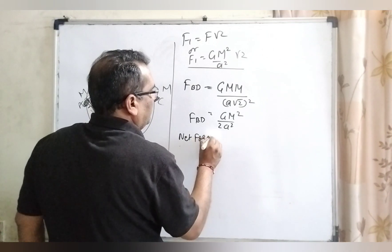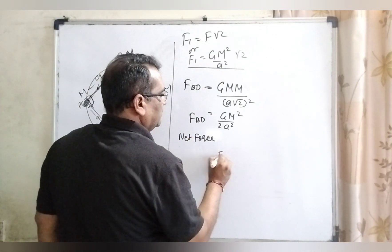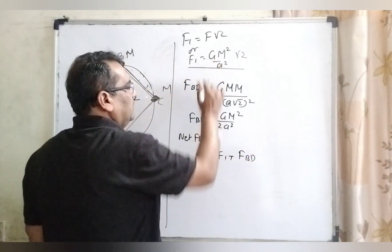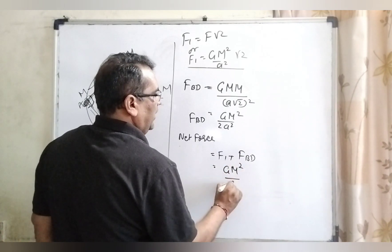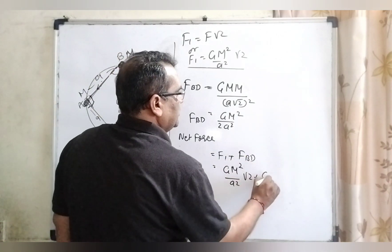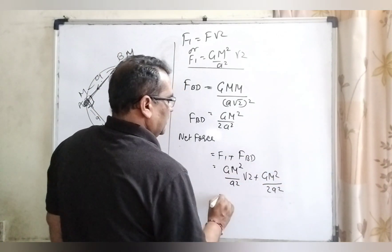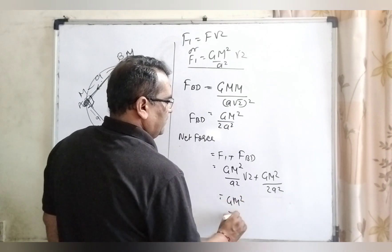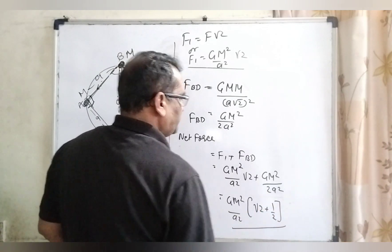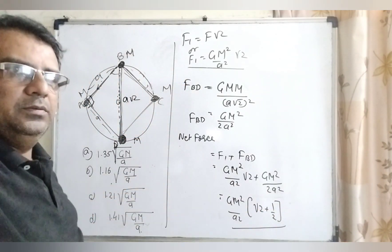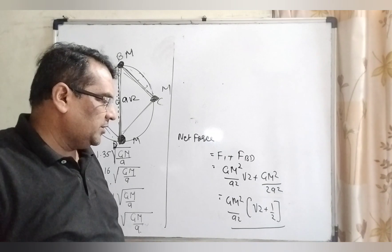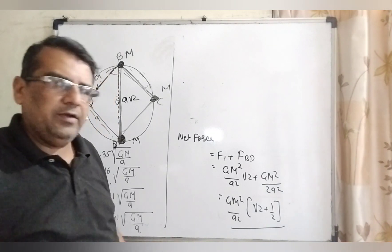Then net force, net force equal to F1 plus F of BD. What is F1? F1 is G, M square, A square root 2 plus what is the F BD? G, M square, GM square to A square. Then GM square, A square get common. Then root 2 and 1 by 2. Here we get the net force GM square by A square into bracket root 2 plus 1 by 2.